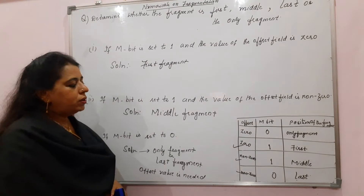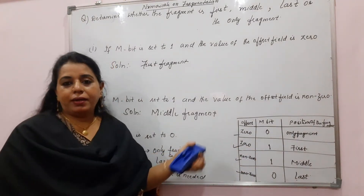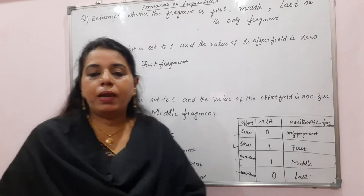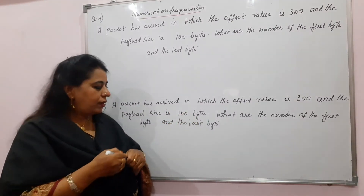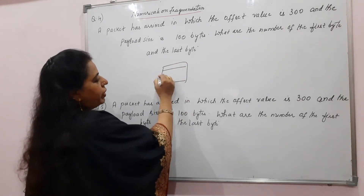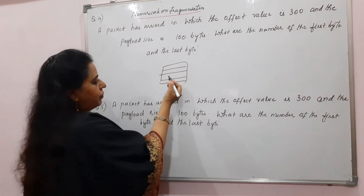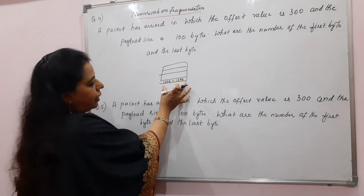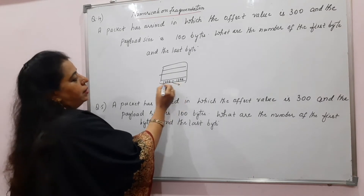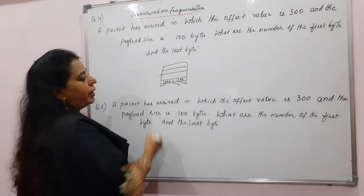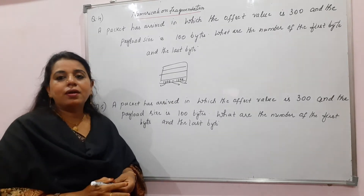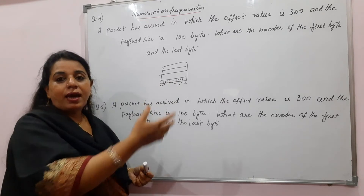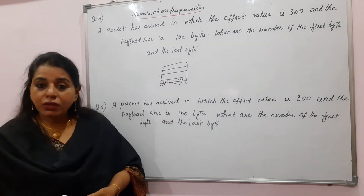These are very simple questions. This way, all possibilities of M bit and offset value are covered, and you can decide. Now, in a fragmented packet, recall those fields — the last field showed the range of bytes. Suppose the first byte number is 1200 and it ends at 1399 — something like that. Questions can ask for the first byte number or the last byte number in that range, given certain parameter values.